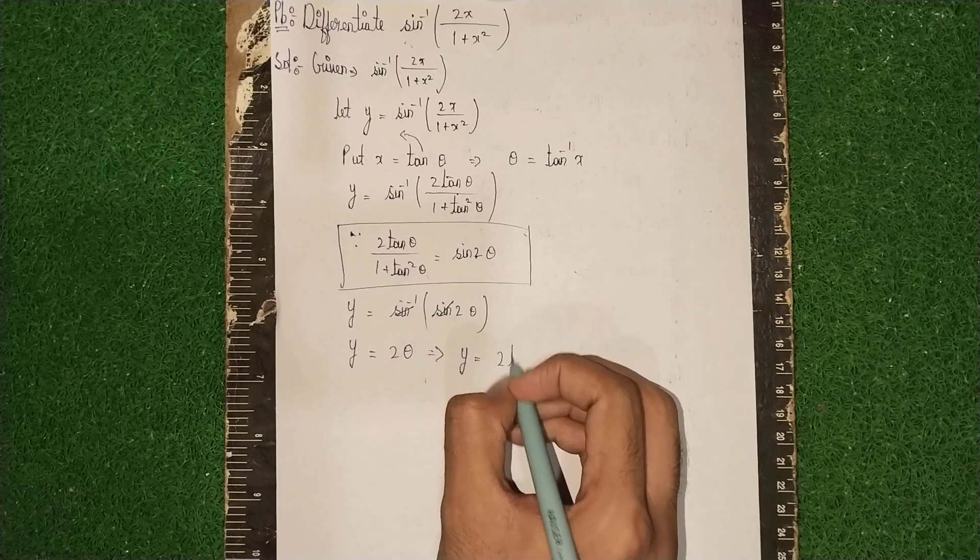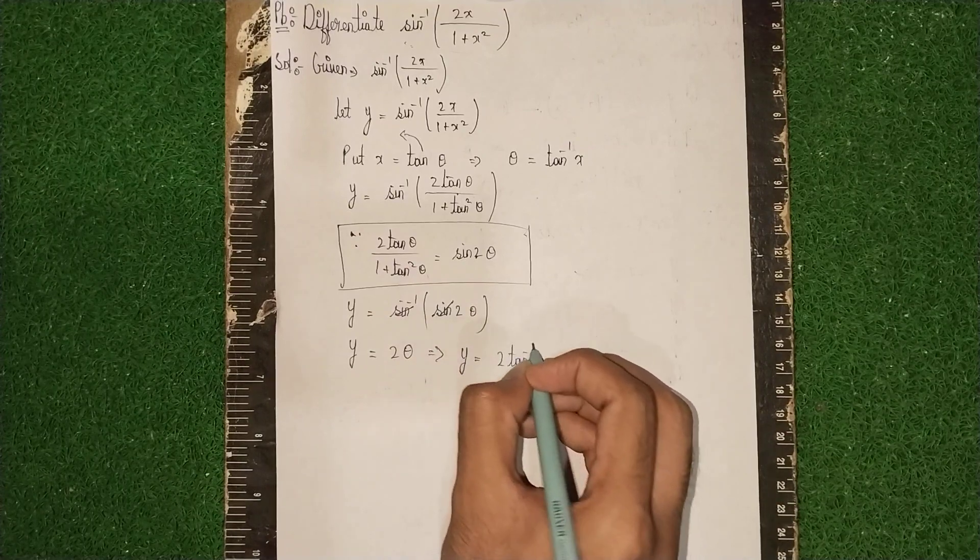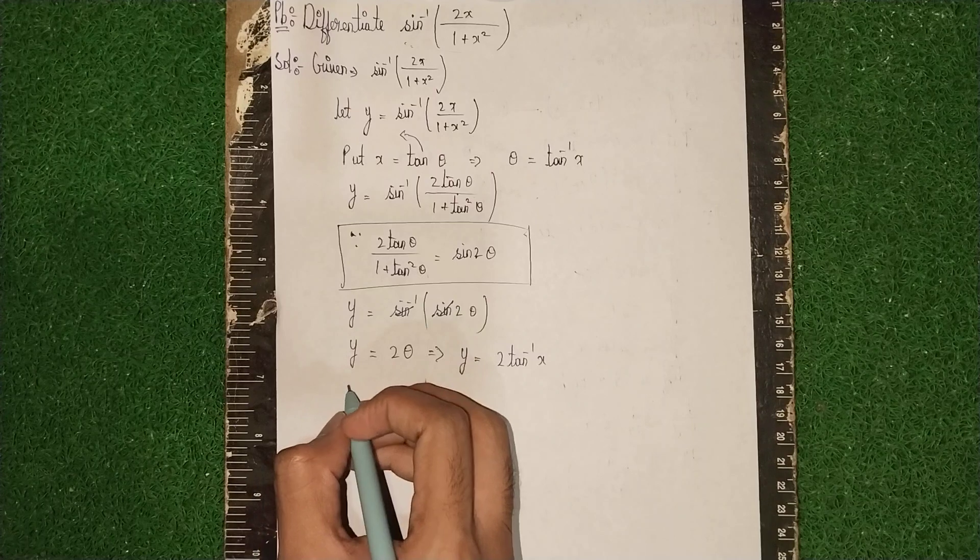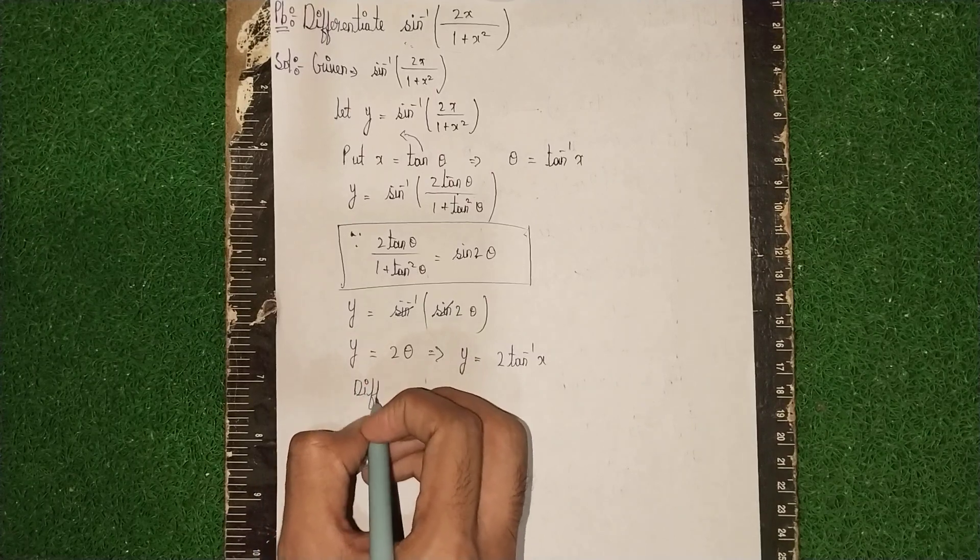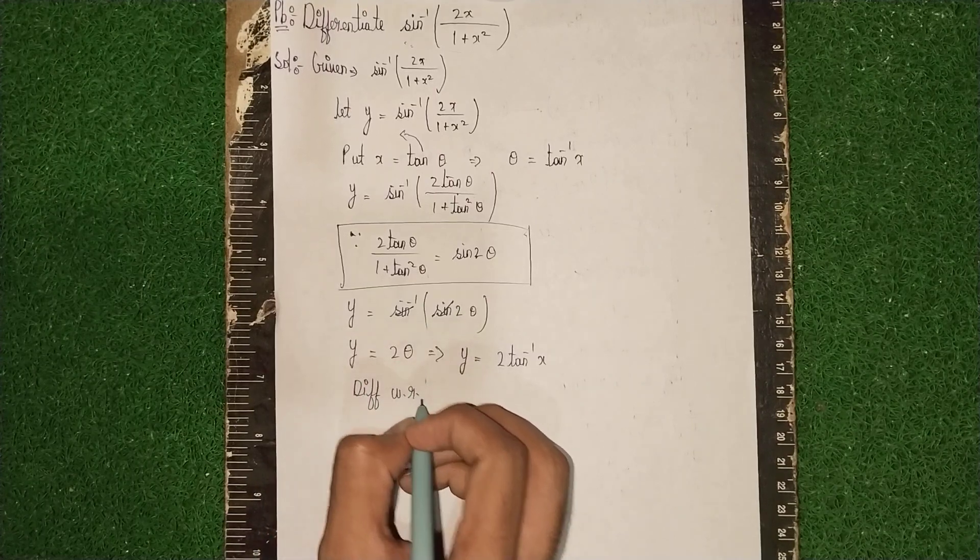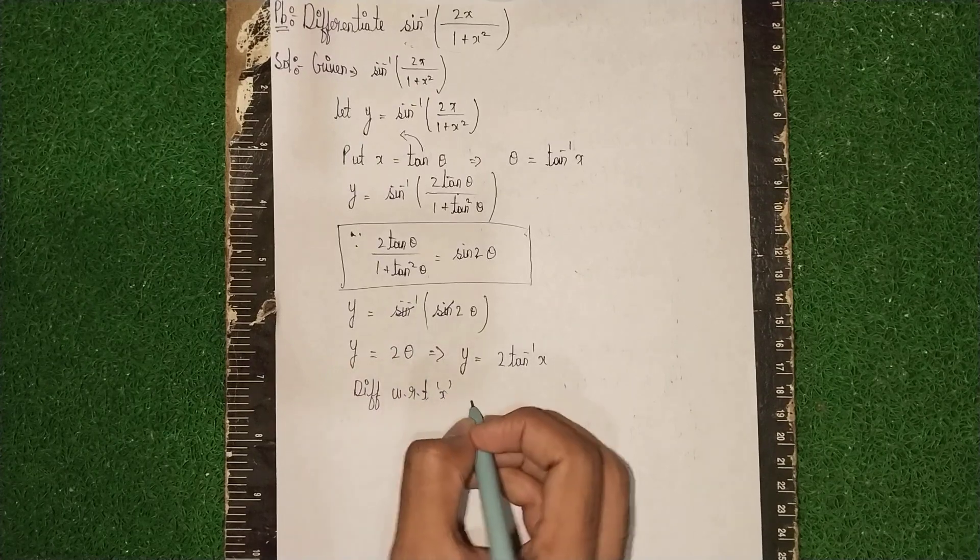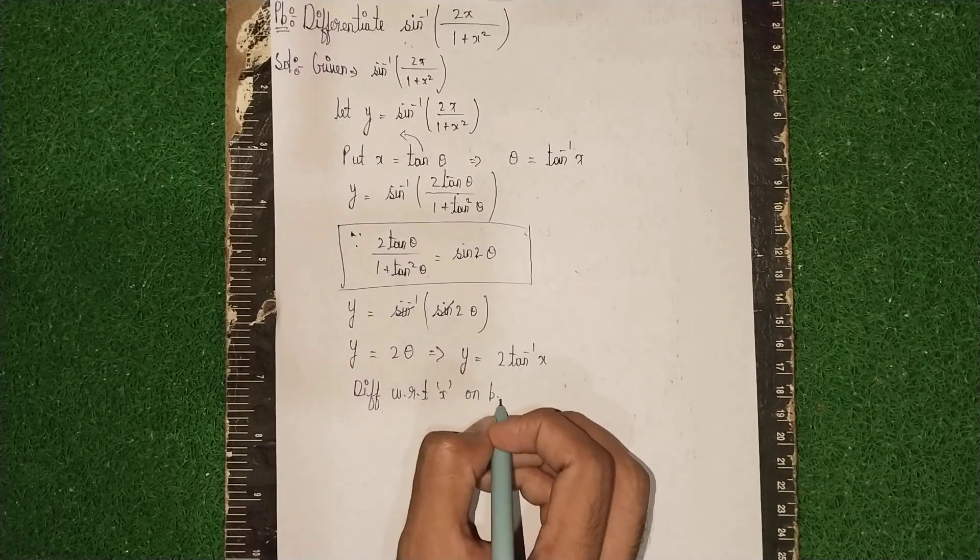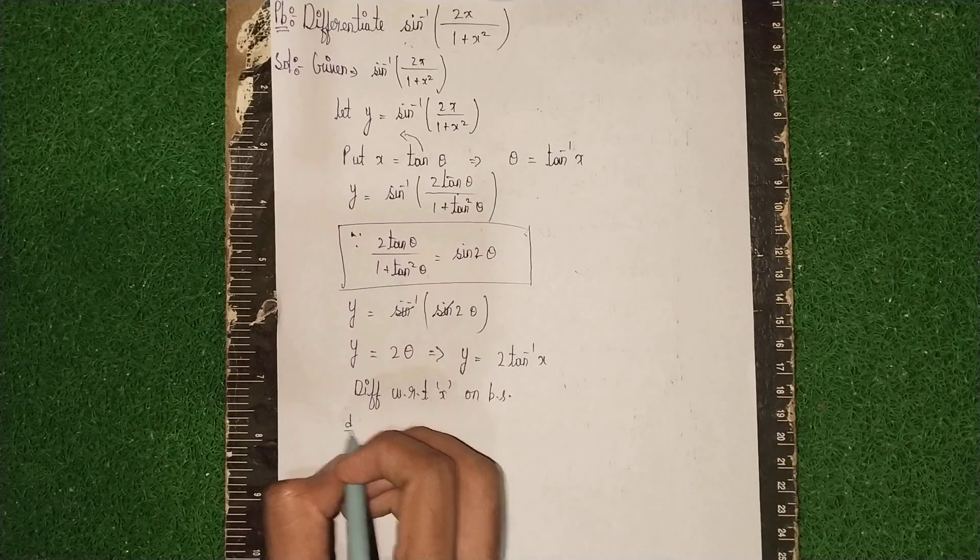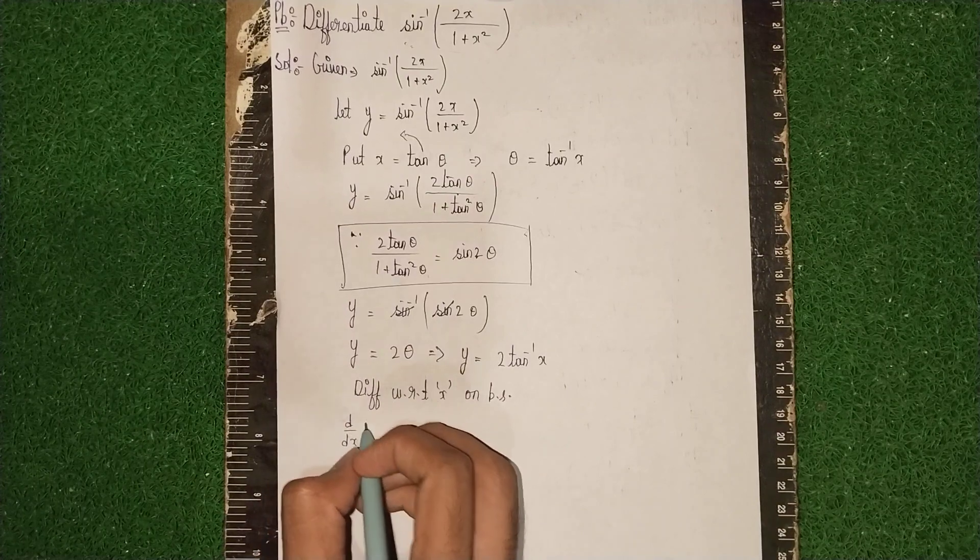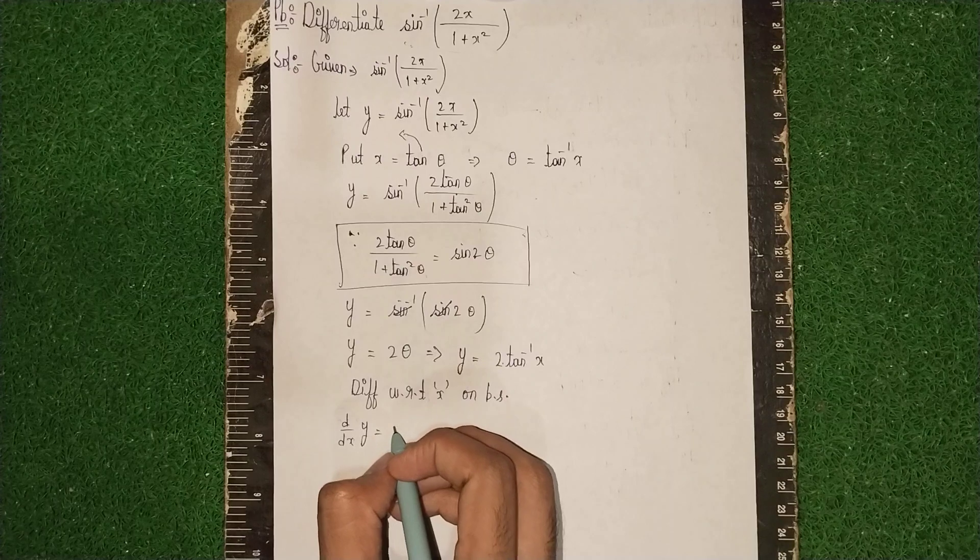Now, differentiate with respect to x on both sides. So d/dx of y = 2 × d/dx of tan⁻¹(x). Thus, dy/dx = 2 × d/dx of tan⁻¹(x).